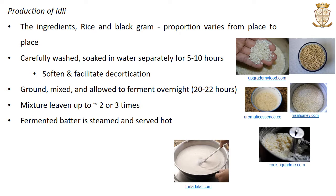mixed, and allowed to ferment overnight. The proportion of rice and black gram varies from place to place. This ground mixture is allowed to ferment overnight — fermentation is spontaneous and the mixture will leaven to approximately 2 or 3 times its original volume. The fermented batter is then steamed and served.